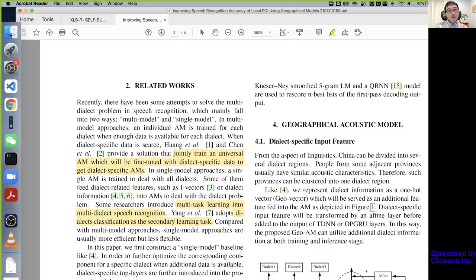Traditionally, a common way of doing this is by jointly training a universal AM which will be fine-tuned with dialect-specific data to get accent-specific models. Some people use multitask learning to do this. You can imagine you have shared bottom layers and the top layers are adapted to different tasks.